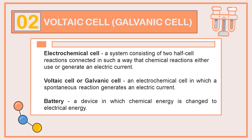Let's define some terminologies. An electrochemical cell is a system consisting of two half-cell reactions connected in such a way that chemical reactions either use or generate electricity. A Voltaic Cell or Galvanic Cell is an electrochemical cell in which a spontaneous reaction generates electricity. A battery is a device in which chemical energy is changed into electrical energy — so basically, a Voltaic Cell or Galvanic Cell is also a battery.